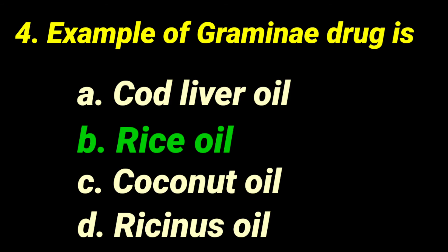Question number four: example of a Graminae family drug. Cod liver oil is used in vitamin A and vitamin D deficiency. Garda moray belongs to the Garidae family. Coconut oil is not a Graminae drug. Ricinus oil is a fixed oil obtained from Ricinus communis belonging to Euphorbiaceae family. The exact correct answer is rice bran oil, otherwise called rice oil, belonging to the Graminae family, with the biological name Oryza sativa. It is prepared by solvent extraction method. Tocopherol and other important antioxidants are present in it.